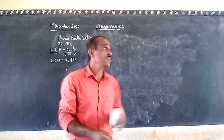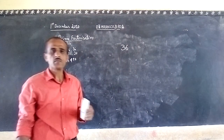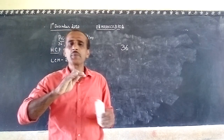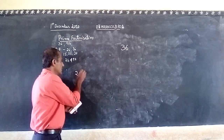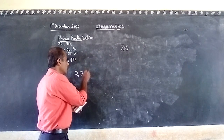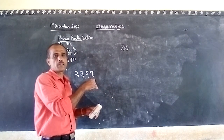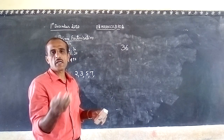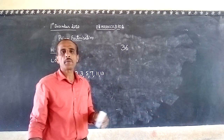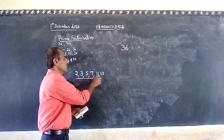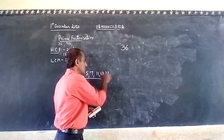Now, what is prime factorization? Let us take one example: 36. We have studied prime numbers — two is the least prime number, then three, five, seven. Four is not a prime number, six is not a prime number, eight is not a prime number, nine is not a prime number. The prime numbers are 2, 3, 5, 7, 11, 13, and so on.